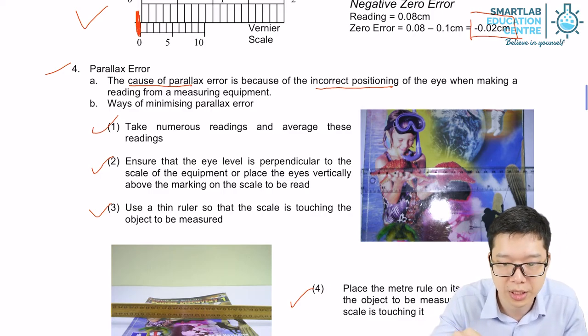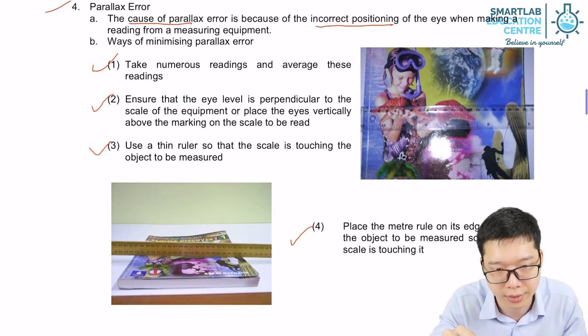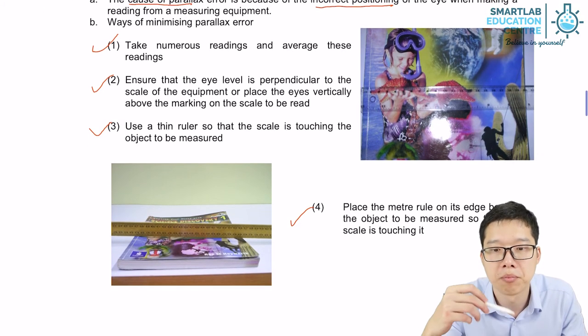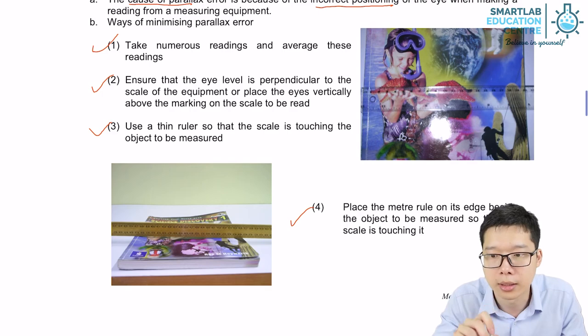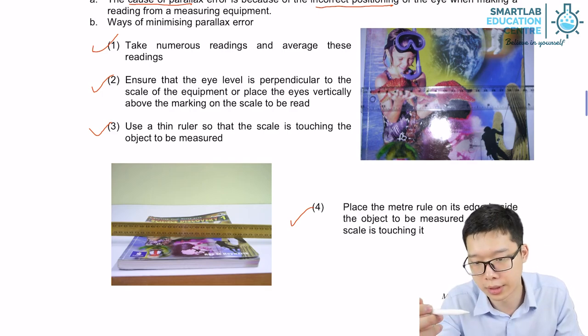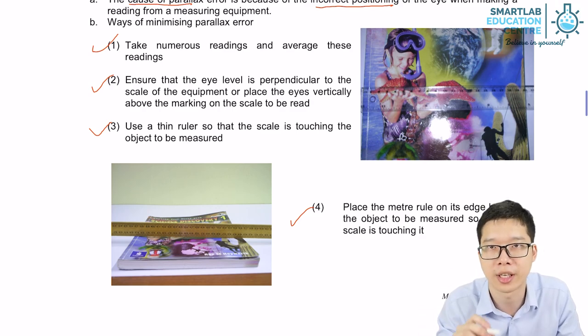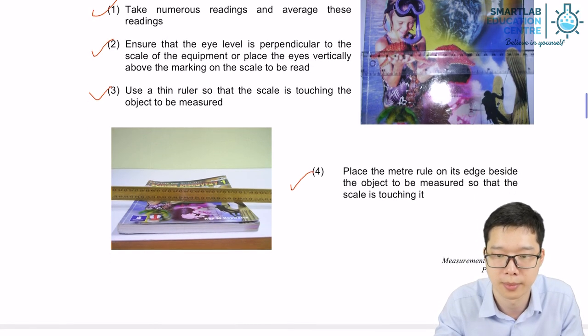So the four ways to minimize the parallax error: take more readings and then take average, make sure your eyesight is perpendicular to the marking, use a thinner ruler, or make sure your markings, your scales, are touching the object you are measuring.